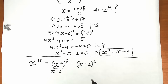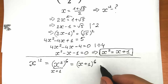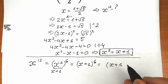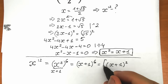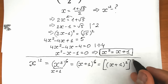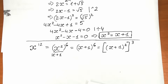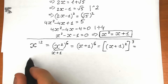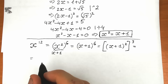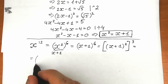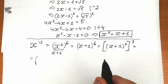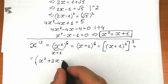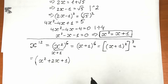Let's write the sixth power as a square raised to the third power: (x+1)^6 = [(x+1)²]³. Now let's expand (x+1)²: we get x² + 2x + 1, all raised to the third power.